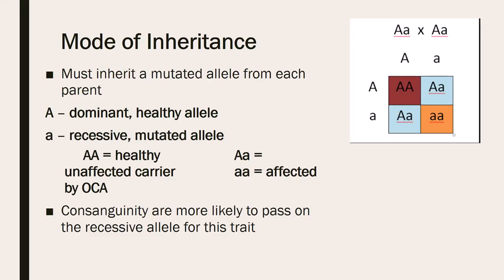As previously mentioned, albinism is an autosomal recessive condition, so an affected individual must inherit a mutated allele from both of their parents. Therefore, both parents must be carriers in order for the child to inherit two mutated alleles. As you can see in the Punnett square on the right, if both parents are carriers, there is a one-fourth chance of the child being affected, a one-half chance that the child is a carrier, and a one-fourth chance that the child inherits two dominant healthy alleles. Additionally, consanguinity — when two close relatives have a child — makes them more likely to pass on the recessive allele, giving their child a higher risk of having albinism.